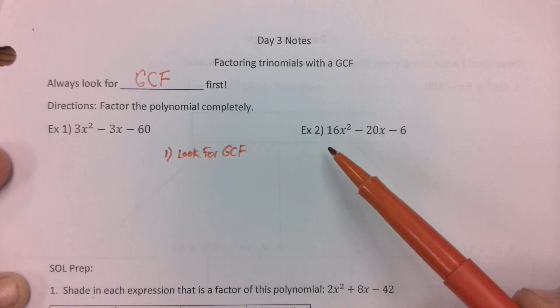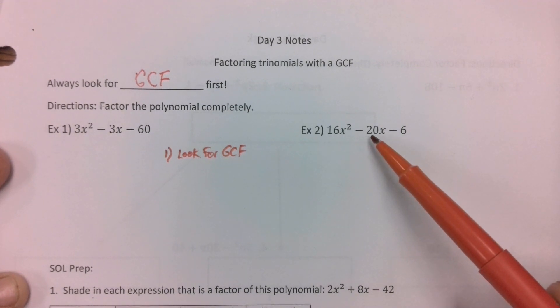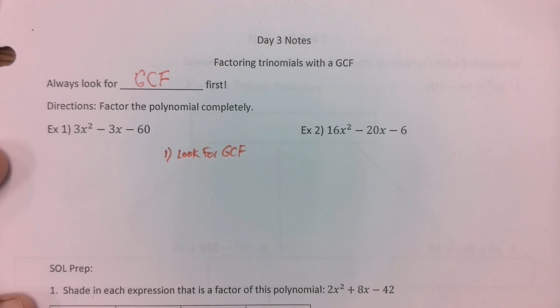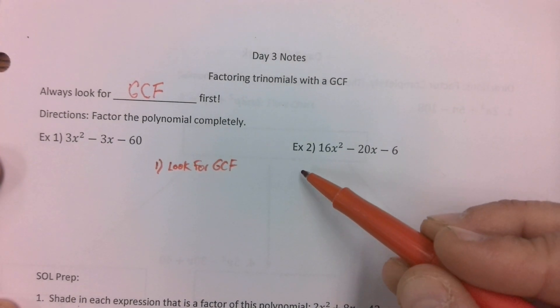And if you look for GCF you should notice that we can divide 16, 20, and 6. All of those are divisible by 2. If you're not entirely sure, remember that you can go into Desmos, type in GCF comma and then 16 comma 20 comma 6 and it should tell you that there is a GCF of 2.